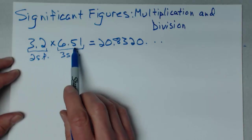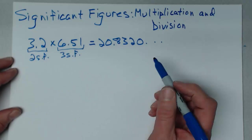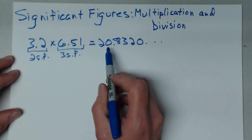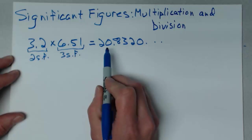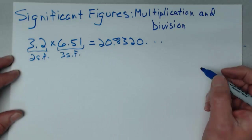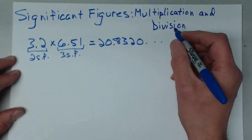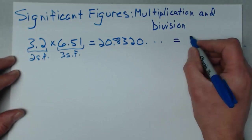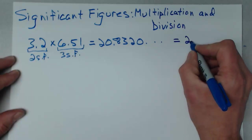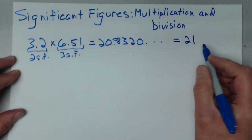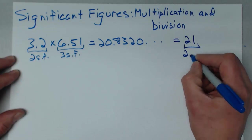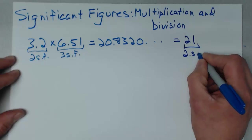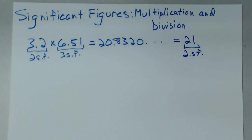The reason is that the uncertainty in 3.2 starts showing up in the second digit, and when I multiply these two together, the uncertainty will first show up in the second digit of the result as well. So I have to round this off to just 21, and that result has only two significant figures.